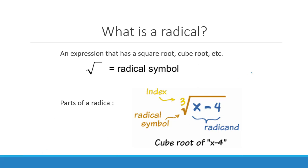You are taking, for example, the cube root of something, the square root of something, the fourth root of something, etc. This is your radical symbol. Your index tells you what type of root you're taking — this is an example of a cube root. This is your radical symbol, and this is your radicand, which is what you're taking the root of.